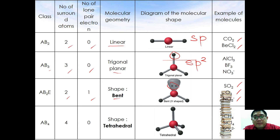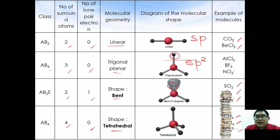If you have four surrounding atoms and no lone pair electrons, it takes the shape of a tetrahedral structure. Examples of AB4 molecules with tetrahedral shapes are CH4, SiCl4, and sulfate ions. This corresponds to the sp3 hybridization concept.